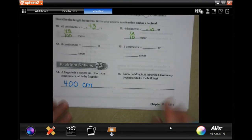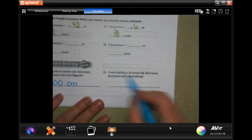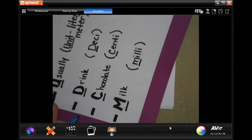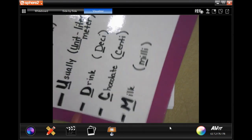All right, a new building is 25 meters tall, how many decimeters? 25, we normally have our decimal right there. We're going from meters to decimeters, we're going to add on one zero.